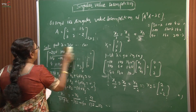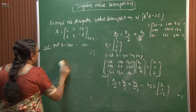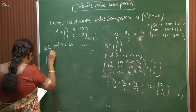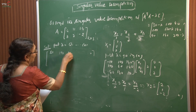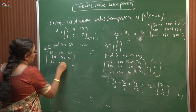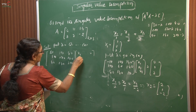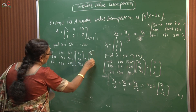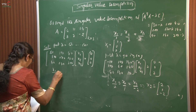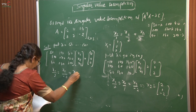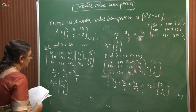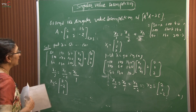Similarly, put lambda = 0. The matrix becomes A^T A itself: [80, 100, 40; 100, 170, 140; 40, 140, 200] times [x1, x2, x3]^T = 0. Writing and solving the system of equations, we get x1/2 = x2/(-2) = x3/1. Therefore the third eigenvector is X3 = [2, -2, 1]. These three eigenvectors correspond to eigenvalues 360, 90, and 0 in decreasing order.